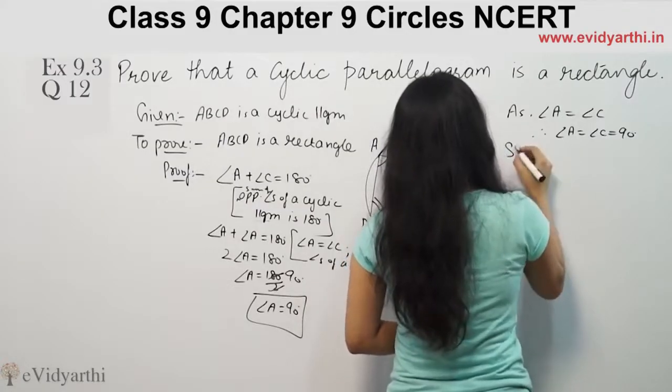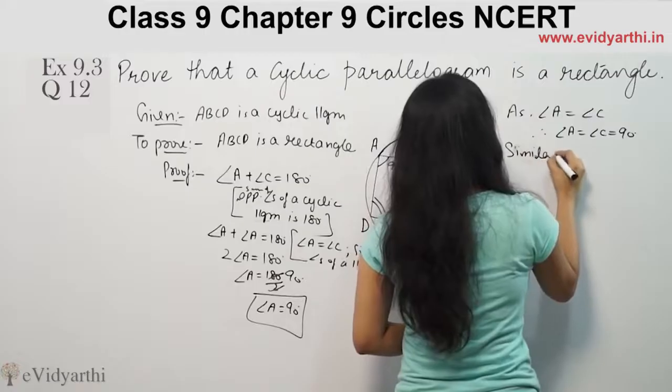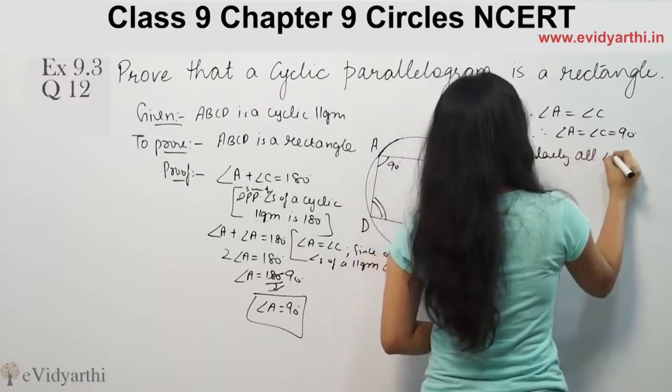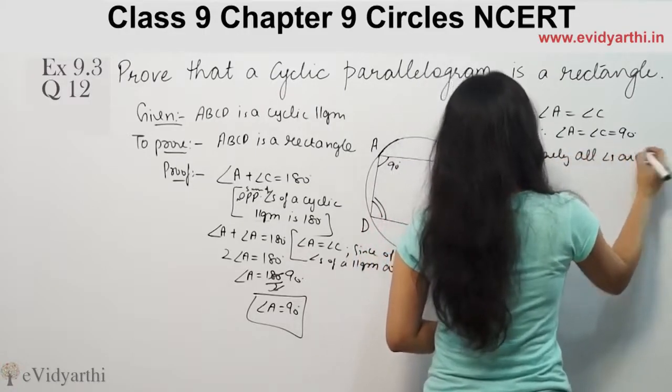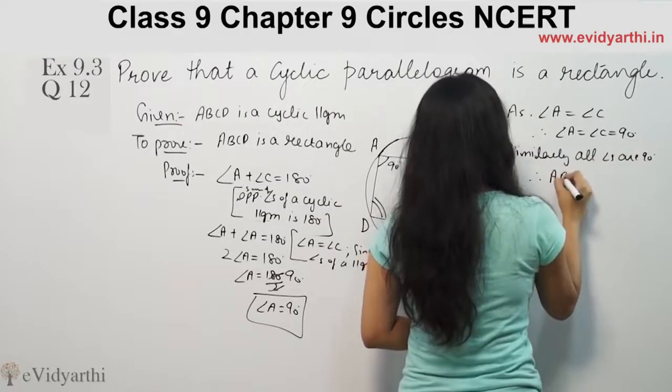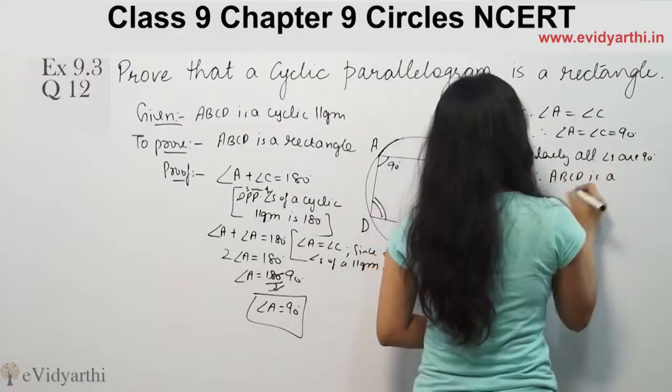Similarly, all angles are 90 degrees. Therefore, ABCD is a rectangle.